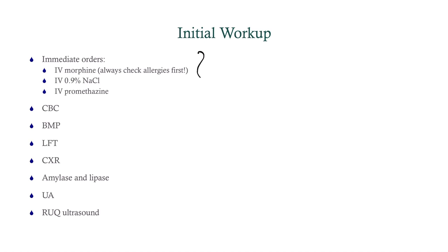For our initial workup, remember we're treating a patient, not a disease — so relieve her pain first. We'll give morphine after checking allergies, bolus her, and give something for nausea. Diagnostically, we'll get a CBC and BMP. Since this is right upper quadrant pain, we'll check liver function tests and get a chest x-ray — not only to look for pneumonia but also for free air under the diaphragm. If getting an abdominal x-ray, use lateral decubitus to better visualize free air. We'll also check amylase and lipase since we're looking at possible liver pathology, order a urinalysis, and most importantly, a right upper quadrant ultrasound.